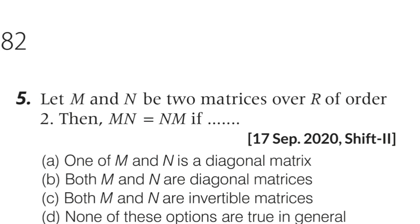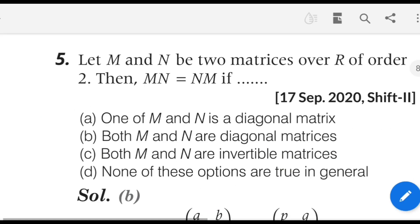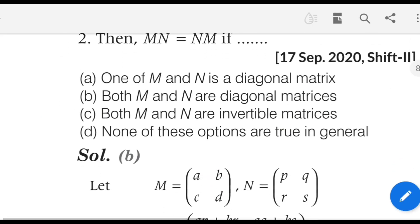MN equals NM when they are diagonal matrices — both M and N must be diagonal matrices. Keep this in mind: if both are diagonal matrices, MN equals NM. In the exam hall, instead of solving the full sum, use this knowledge to save time and crack the exam.